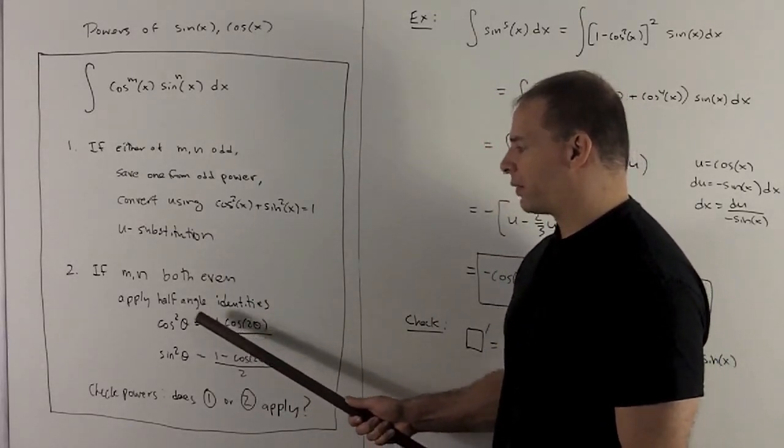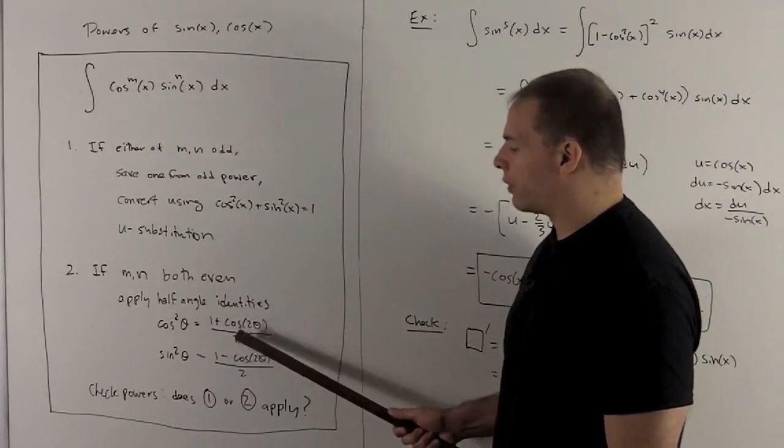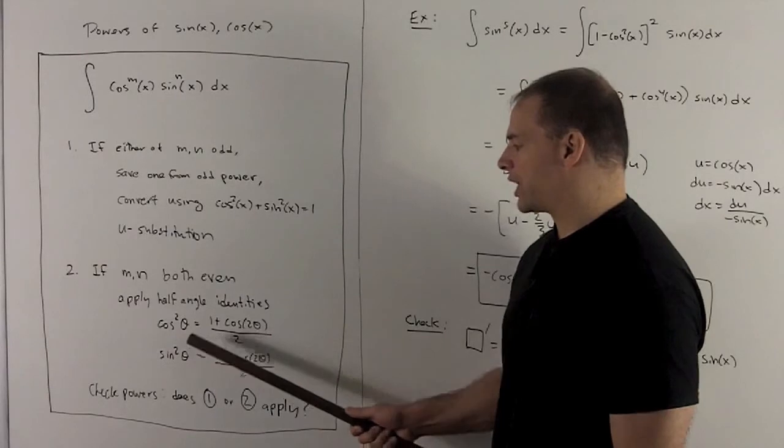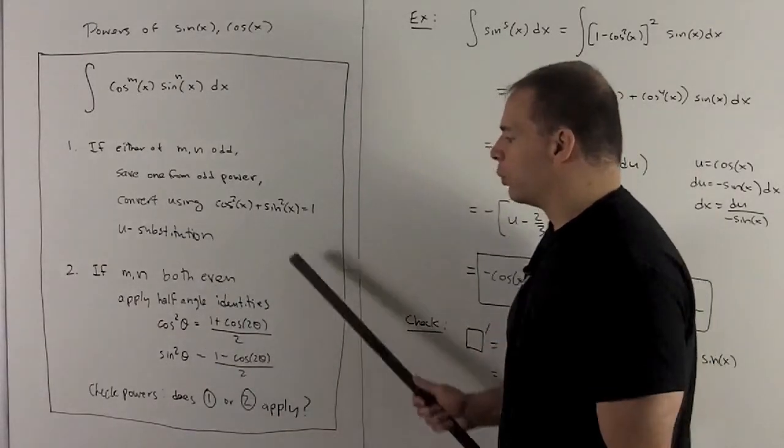So we'll have, for cosine squared, 1 plus cosine 2 theta over 2. For sine, same idea, except you put a minus sign in. How do you remember these?